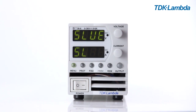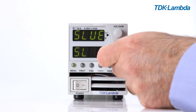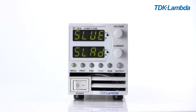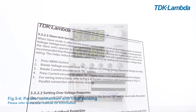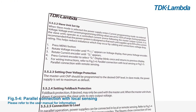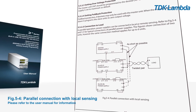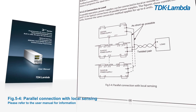In advanced parallel mode, the total system current will be displayed on the master unit. Connect the units as shown in figure 5-4 in the user manual.